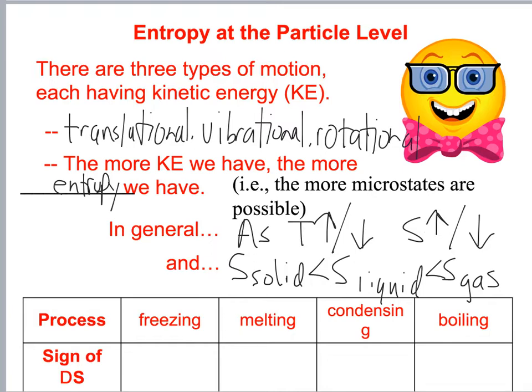The entropy of a solid is less than the entropy of a liquid, which is less than the entropy of a gas. The sign for freezing is negative — it's getting more ordered. Melting is positive — more disordered. Condensing is negative, and boiling is positive.